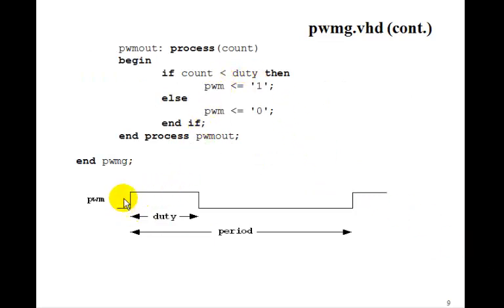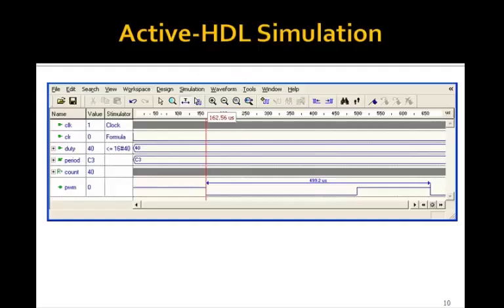And to compute the PWM, then if count is less than duty, PWM is 1, else PWM is 0. So this will generate a PWM signal that we could use to control the speed of a motor.